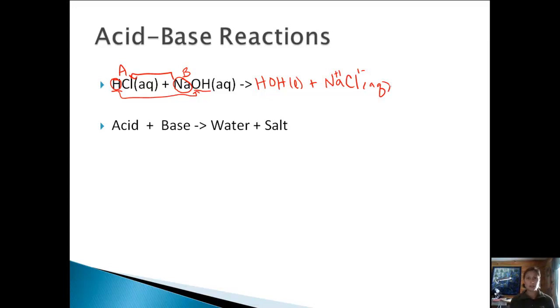So the general form for an acid-base reaction is an acid plus a base forms water and a salt. Now we did form sodium chloride, which is table salt, but we can form lots of other types of salts. Remember any of those halogens? Halogen means salt-forming. So almost any alkaline metal or alkaline earth metal with a halogen is considered a salt.